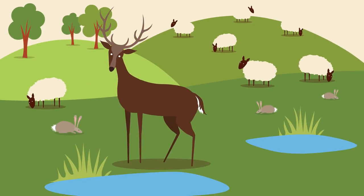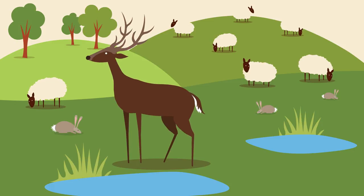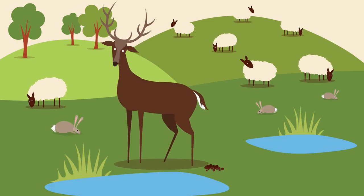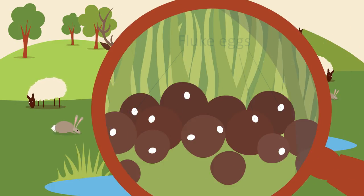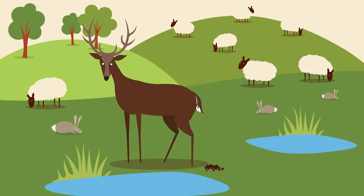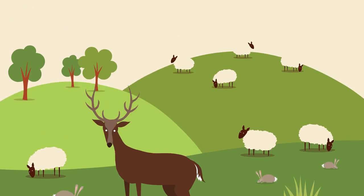Just to complicate things further, liver fluke also infects wildlife, most notably deer and rabbits, so these can keep the life cycle going in the absence of livestock, or even if the livestock have been successfully treated.